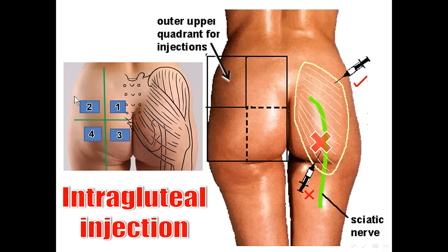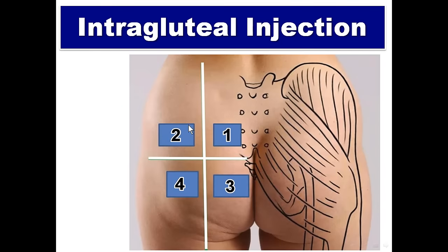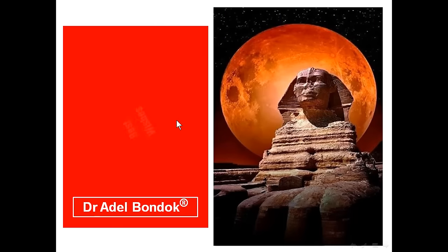Finally, regarding intramuscular injection in the gluteal region: the gluteal region is divided into four quadrants — upper lateral, upper medial, lower lateral, and lower medial. The injection must be placed away from the nerves, especially the sciatic nerve. Therefore, the safest site for intramuscular injection is the upper lateral quadrant. Thank you very much, best wishes, and good luck.